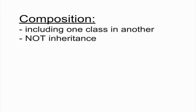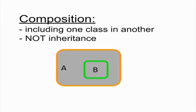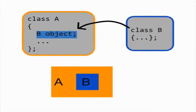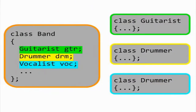Composition is the process of making one class a data member of another class — one class is embedded in the functionality of another. For example, you could have a class called band. The data members of band could consist of objects from the guitarist class, drummer class, and vocalist class. None of these classes are derived from each other; instead, one class is using the objects of external classes.